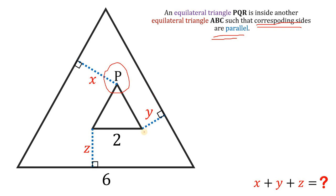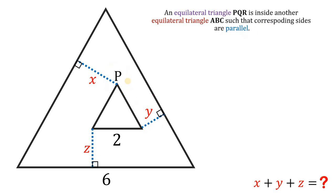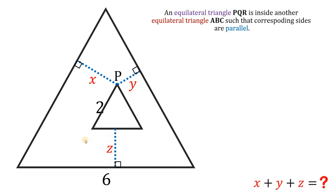What we're going to do is to move this segment Y directly to point P like this. Also, we will move this segment Z directly below point P. Next, what we're going to do is to extend this segment like this. Now this extra segment right here, we will call this as N.